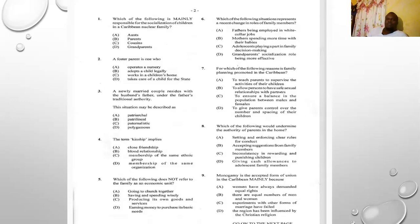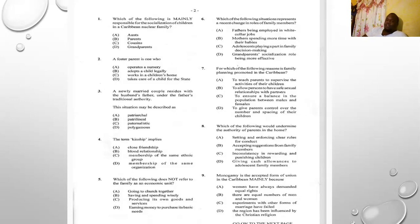Number six: which of the following situations represents a recent change in the role of family members? A) fathers being employed in white-collar jobs, B) mothers spending more time with babies, C) adolescents playing a part in family decision making, D) grandparents' socialization role being more effective. Three are traditional and one is new. The answer is C — adolescents playing a part in family decision making never used to happen. Traditionally the father was the decision maker, but with changing families many men are no longer playing a central role.